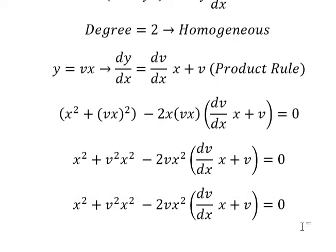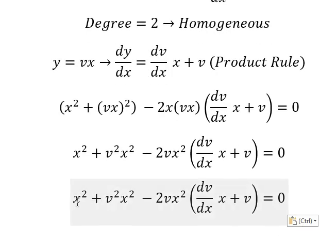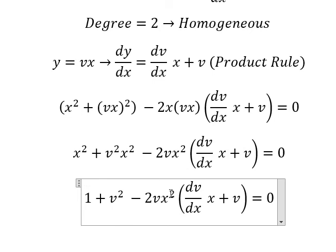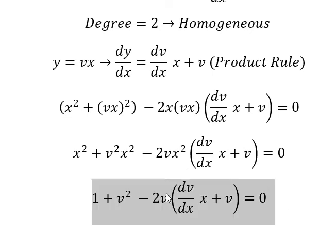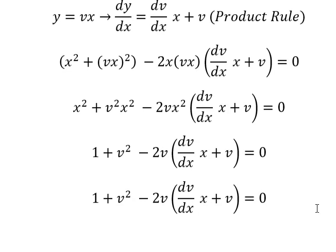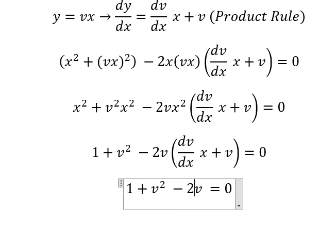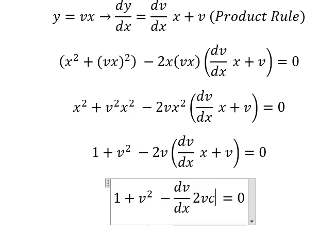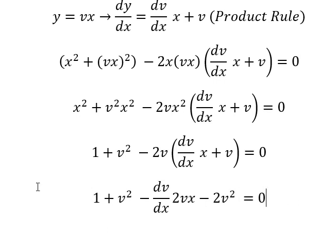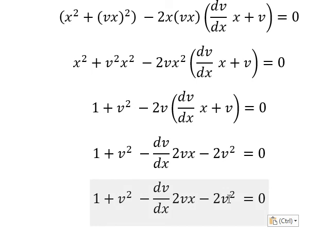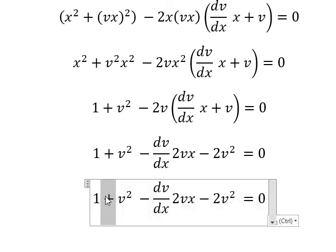Next, we divide both sides by x square. Next, we multiply negative 2v for this one and this one. So v square minus 2v square, we have negative v square.